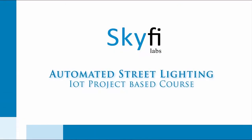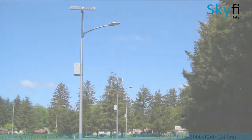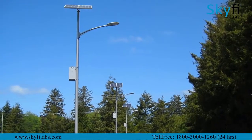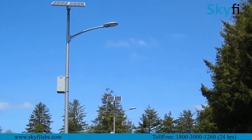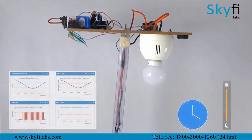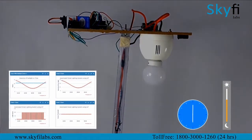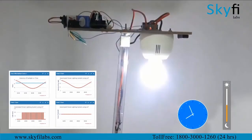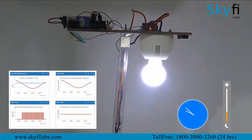Internet of Things is a breakthrough technology that connects various devices to the internet and makes them smart and efficient. In this course, you will build an IoT-based automated street lighting system that switches street lights on and off efficiently. It also collects data about the usage of street lights and sends it to the cloud for storage and analysis.